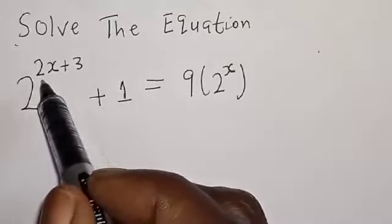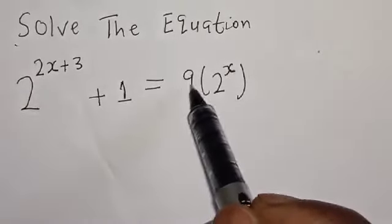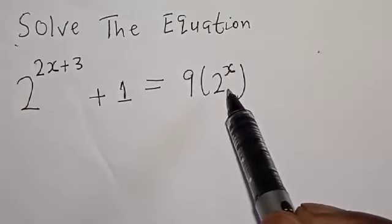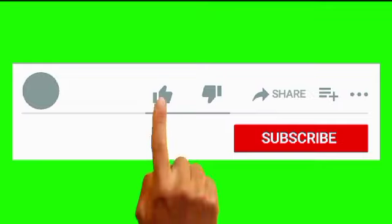2 raised to power 2s plus 3 plus 1 is equal to 9 into 2 raised to power s. Before we proceed, please don't forget to like, share, comment, and subscribe.